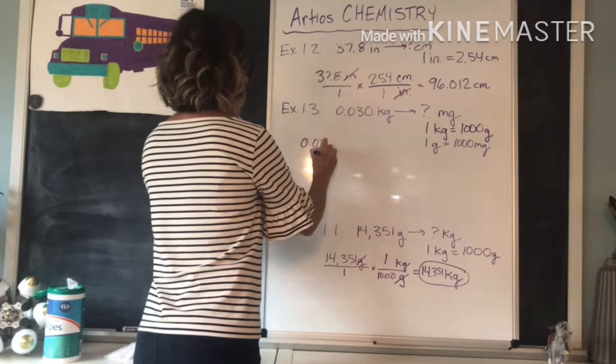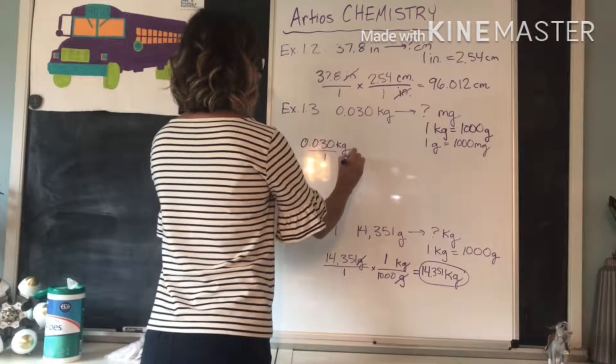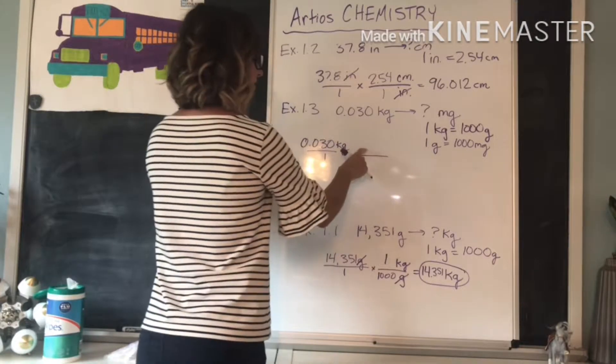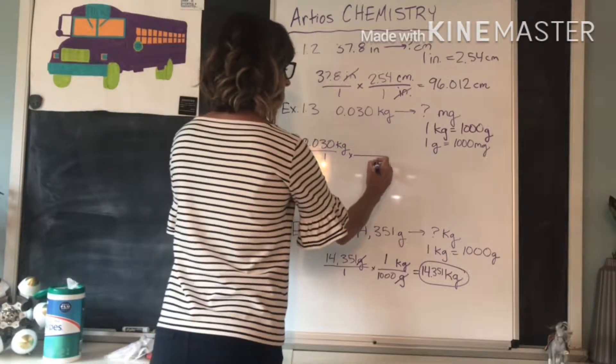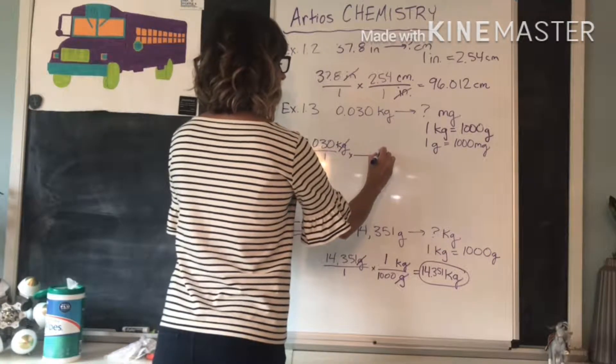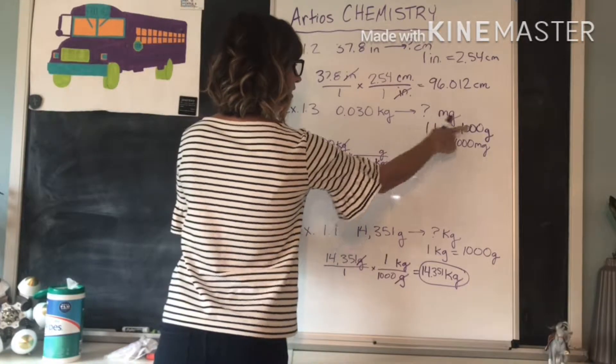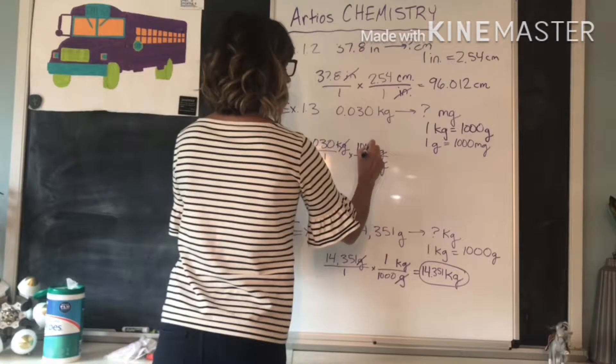Put 0.030 kilograms over one times - our first ratio is going to have kilograms in the bottom so the kilograms are going to cancel out, and grams on the top. So we're using this one: one kilogram equals 1,000 grams.